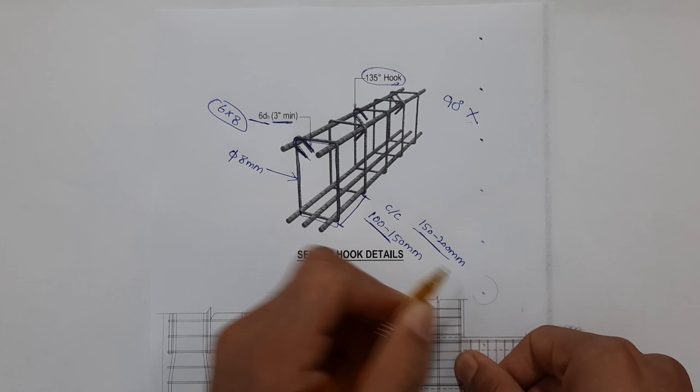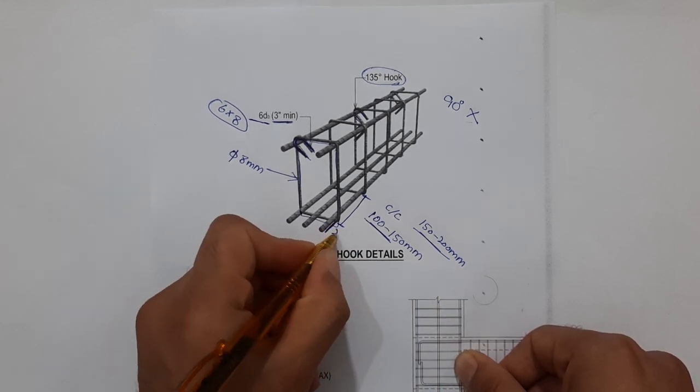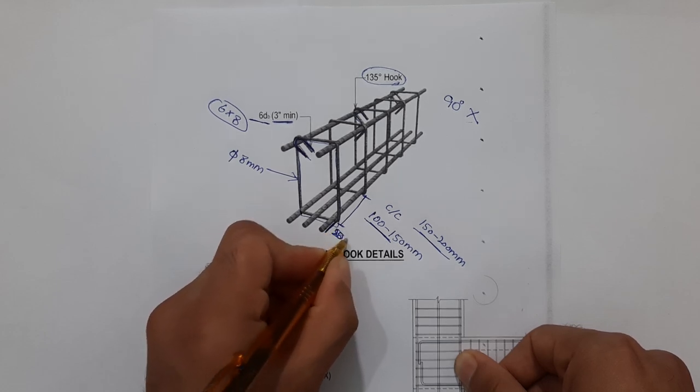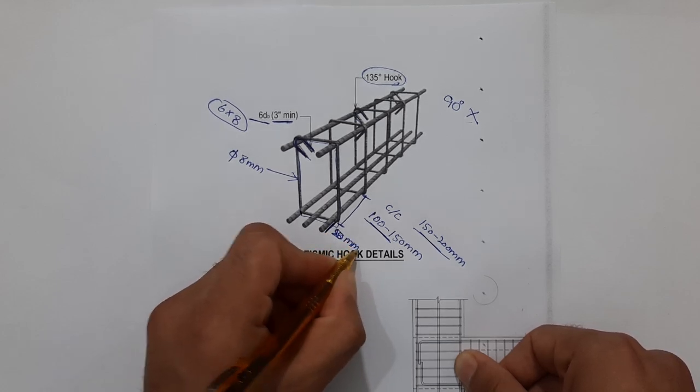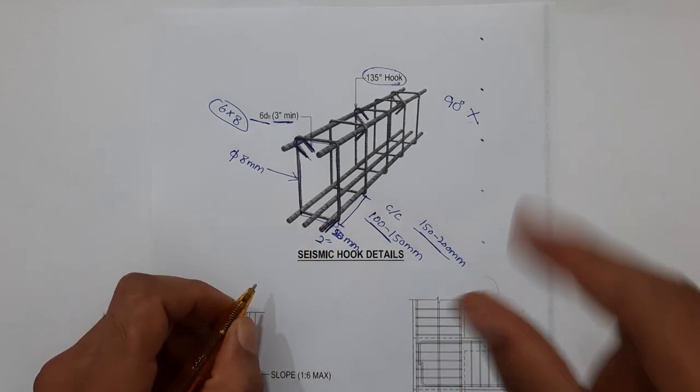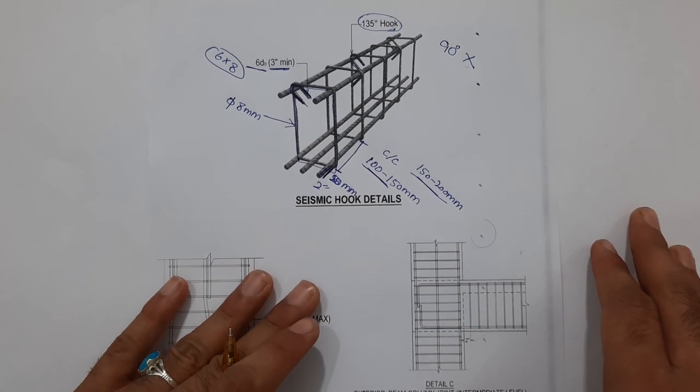The first stirrup should be placed with minimum 50 millimeters or 2 inches distance. So this is the seismic hook details which I have discussed in front of you.